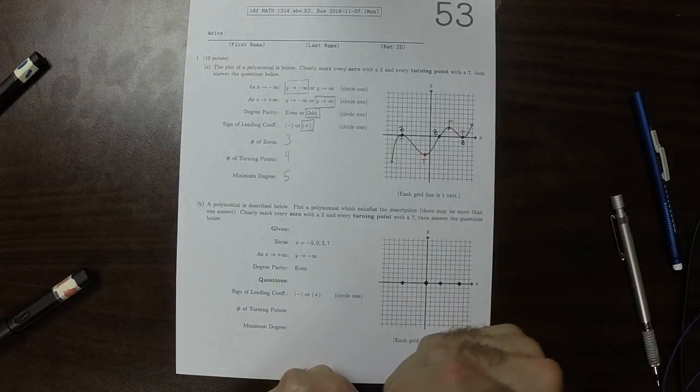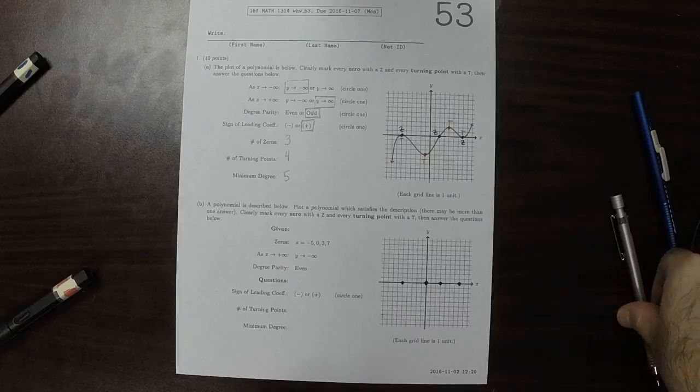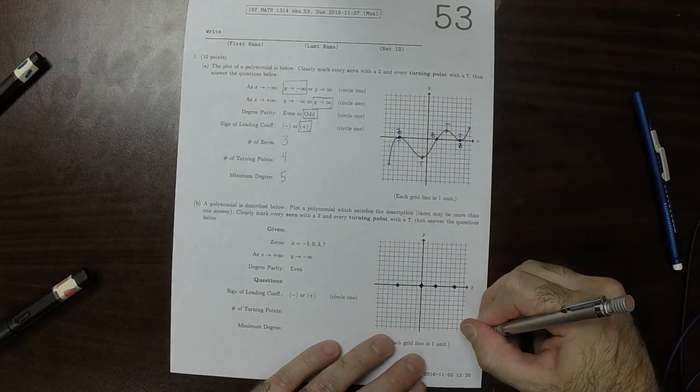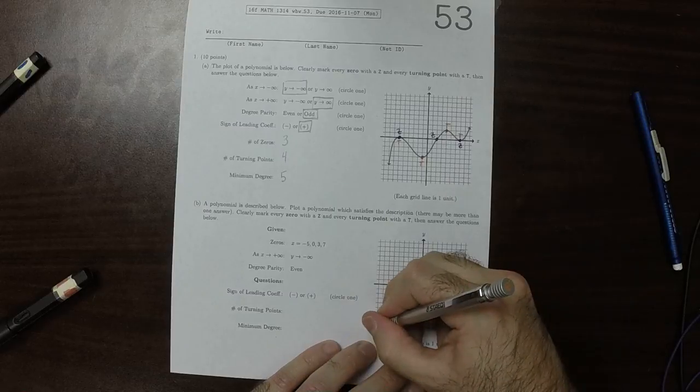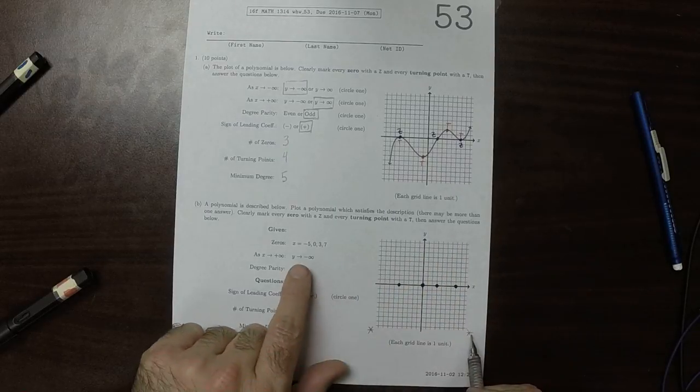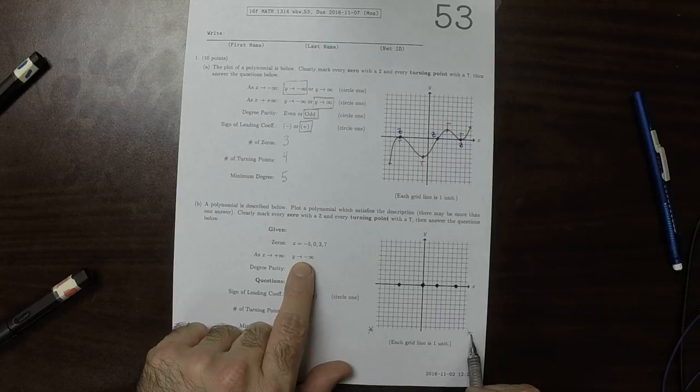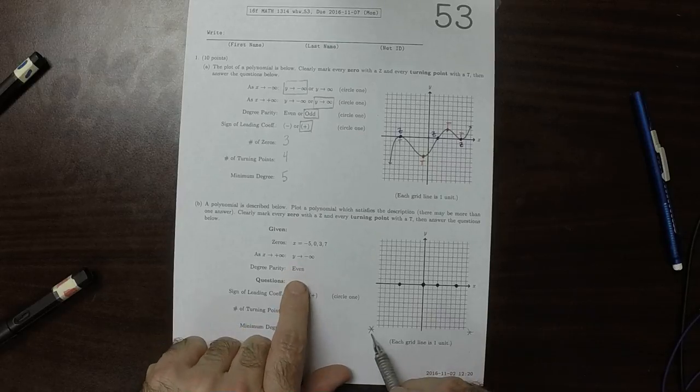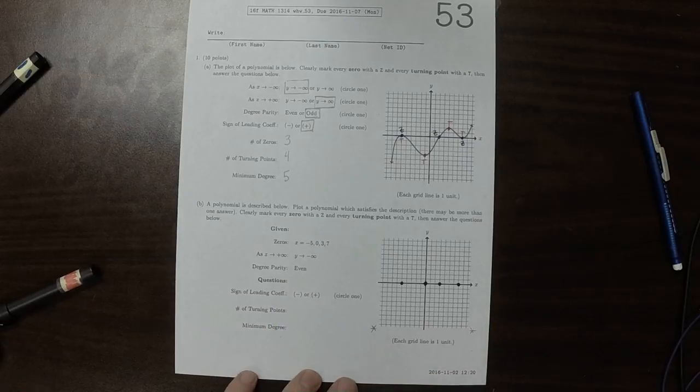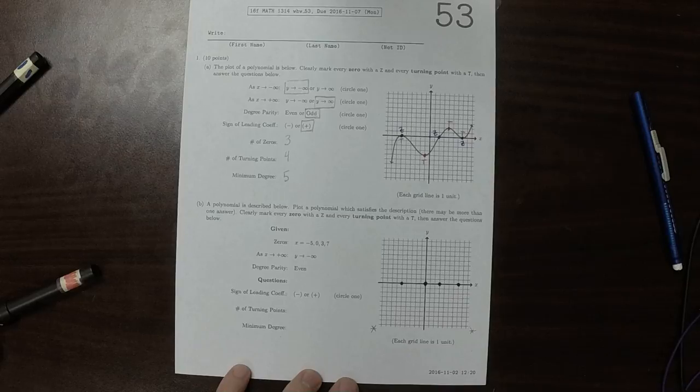So as it goes to the right, it goes down, and it's even. So that means we're going to have to end down here and start over here. We're going to end down here because of that, and we're going to have to start down here because it's even. We want to plot a polynomial that satisfies these requirements, and there may be more than one answer.